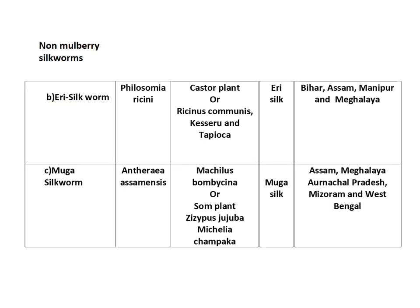Eri silkworm: the scientific name is Philosamia ricini. It feeds on food plants such as Ricinus communis, commonly called the castor plant. Eri silkworm also feeds on Kesaru and Tapioca. The silk produced is called Eri silk, and Eri silkworms are found distributed in Bihar, Assam, Manipur, and Meghalaya.